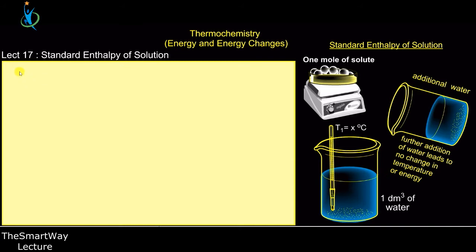How is a solution formed? A solution is formed when I add a solute to a solvent. So when I add solute to a solvent, I get what we call a solution. A solution is a uniform medium or a uniform mixture formed by adding a solute to a solvent.